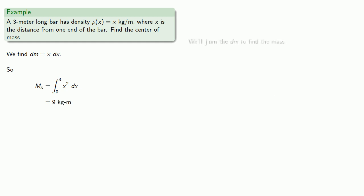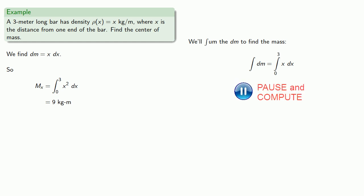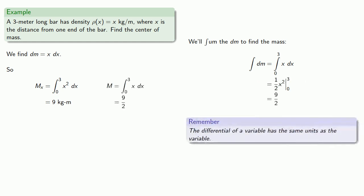We also sum to find the actual mass. Our differential of mass is dm = x dx, and x goes from 0 to 3. The differential of mass has units of kilograms, so our total mass — the integral of x dx from 0 to 3 — evaluates to 9/2 kilograms.